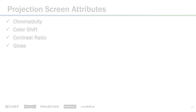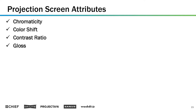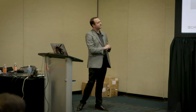So chromaticity, color shift, contrast ratio — look at all this stuff we're learning really quickly. Gloss is the next one. Gloss, we don't have to do an in-room test on this, but you can understand just based on the slide, hopefully.